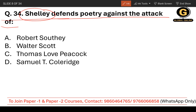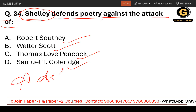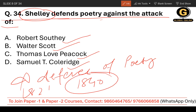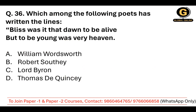Question number 34: Shelley — that is P.B. Shelley — wrote Defence of Poetry against the attack of whom? The options are Robert Southey, Walter Scott, Thomas Love Peacock, and Samuel Taylor Coleridge. The essay is titled Defence of Poetry, written in 1821 and published posthumously in 1840. In this essay, he argued about the importance and value of poetry as a force for social and moral good. The correct answer is Thomas Love Peacock, the third option.